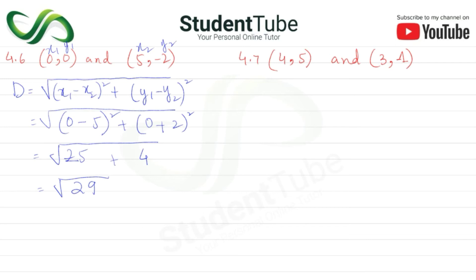Now problem 4.7: points are (4, 5) and (3, 1). D = √[(x₁-x₂)² + (y₁-y₂)²].